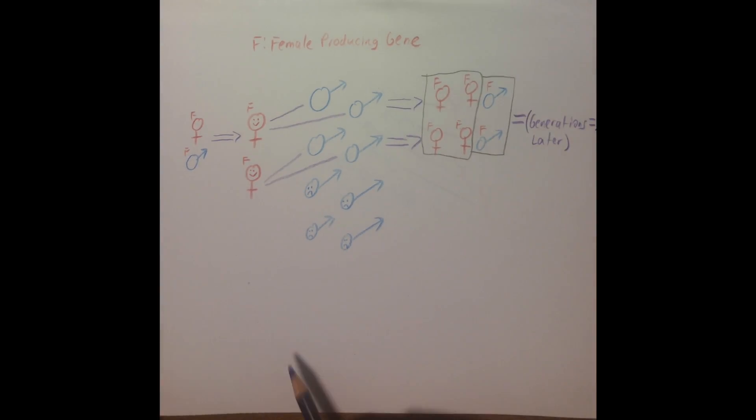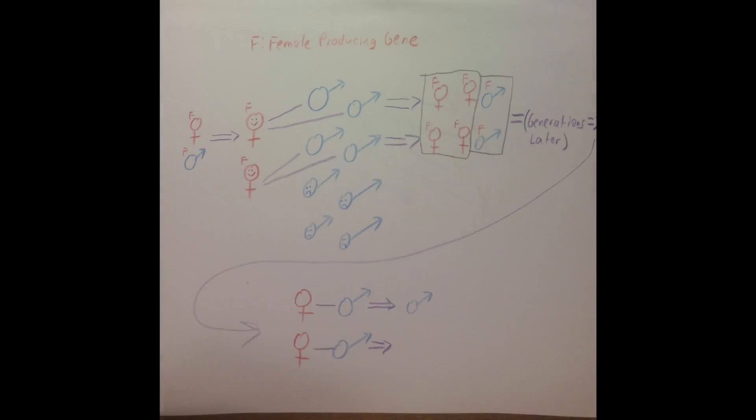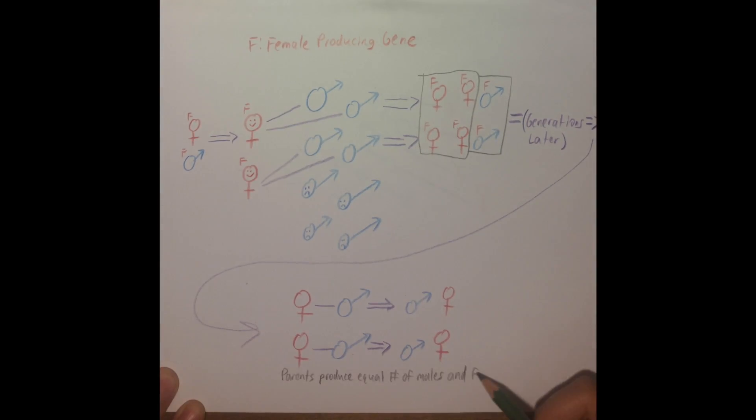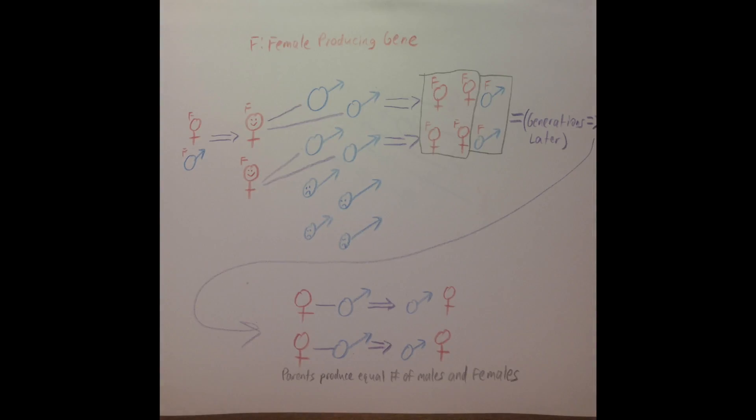The 1-to-1 sex ratio will be approached and the expenditure to produce females and males evens out, as the advantage of producing females becomes less significant.